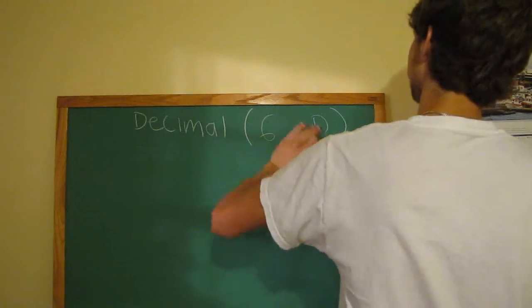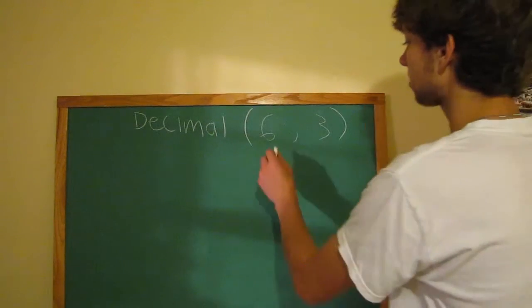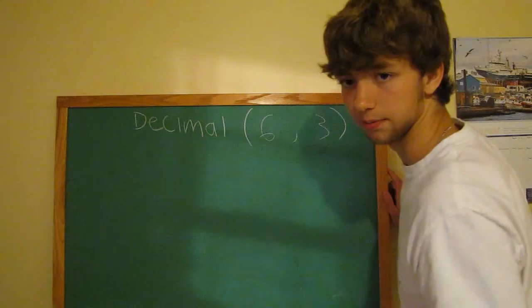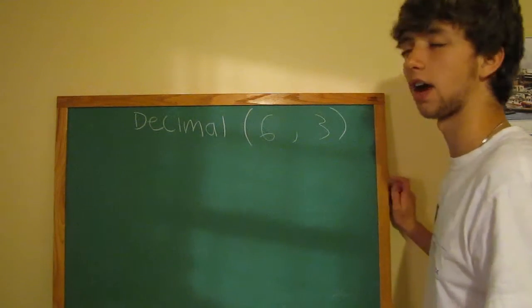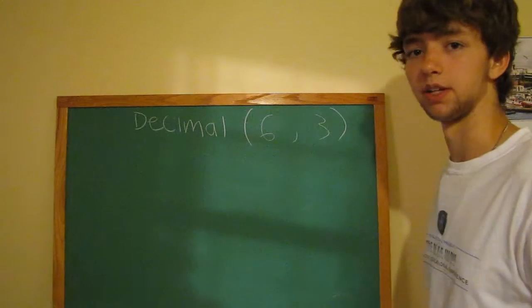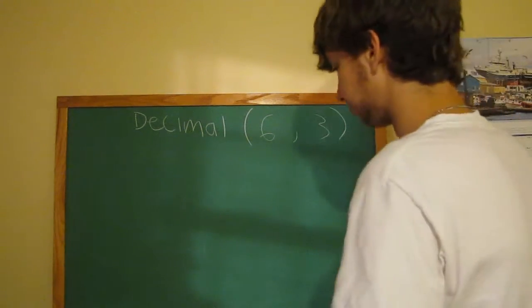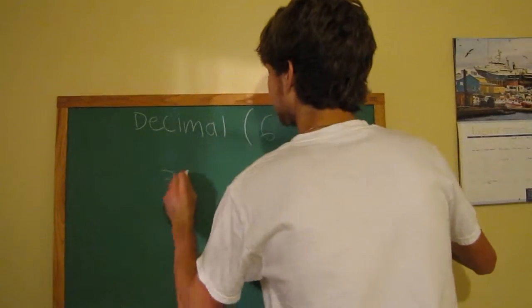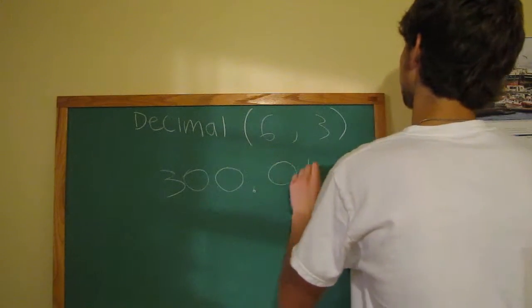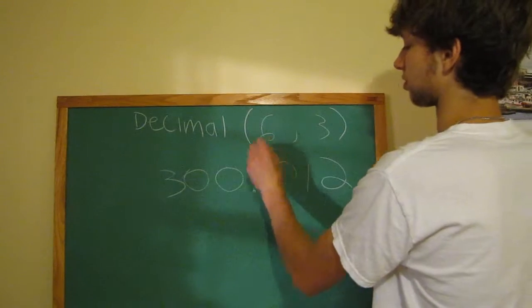So, if you replace this with a 6 and d with a 3, so 6 is the precision, 3 is the scale. So, what precision is, is how many digits are in the number, and scale is how many digits after the decimal. So, 300.012. This has a precision of 6.